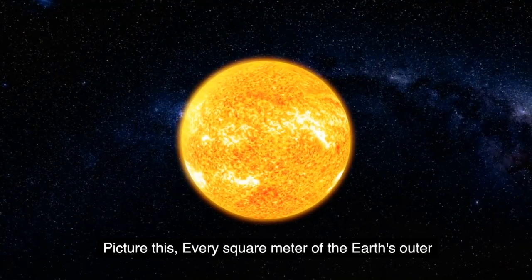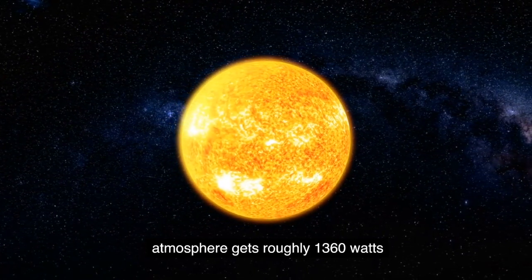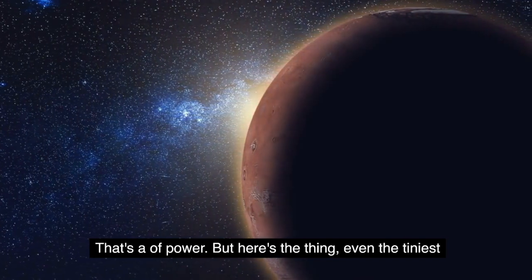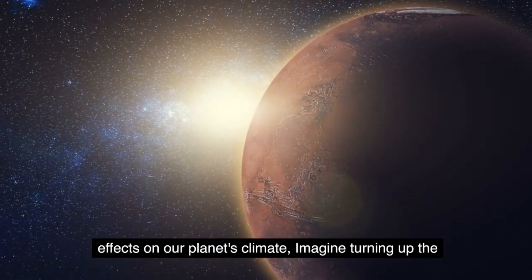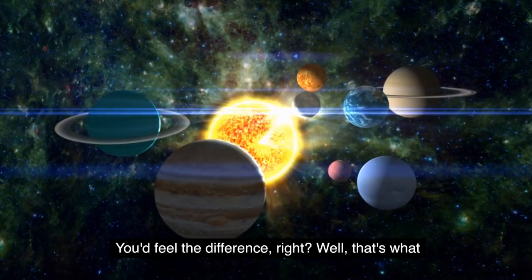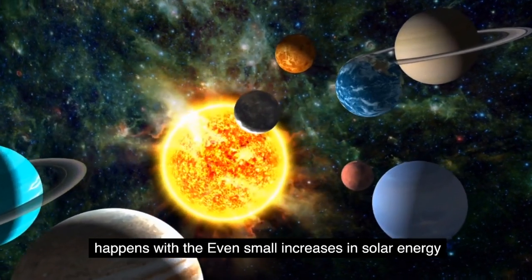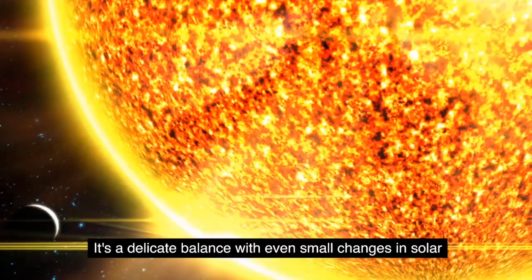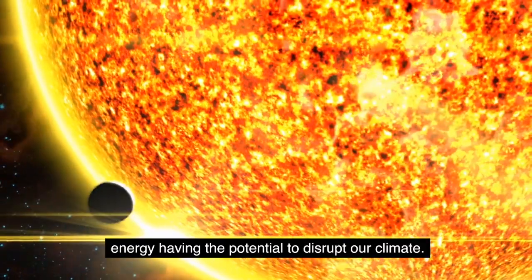Picture this. Every square meter of the Earth's outer atmosphere gets roughly 1360 watts of solar energy on a sunny day. That's a lot of power. But here's the thing, even the tiniest fluctuations in this solar constant can have significant effects on our planet's climate. Imagine turning up the heat in your home by just a fraction. You'd feel the difference, right? Well, that's what happens with the Earth. Even small increases in solar energy can cause the Earth to warm up, leading to changes in our climate. It's a delicate balance with even small changes in solar energy having the potential to disrupt our climate.